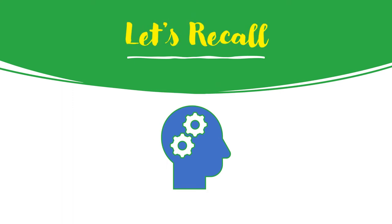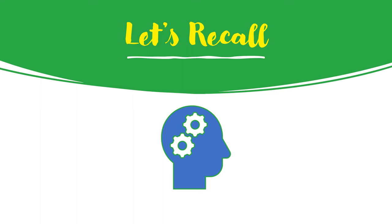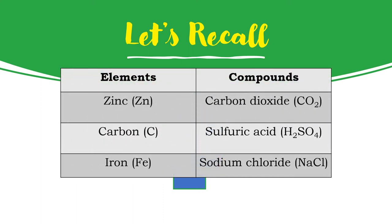Let's recall first: give three examples of an element with its symbol and three compounds with its formula. We have zinc with symbol Zn, carbon with symbol C, and iron with Fe. For the compounds, we have carbon dioxide with formula CO2, sulfuric acid with H2SO4, and sodium chloride, NaCl.